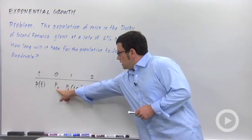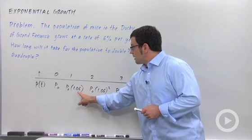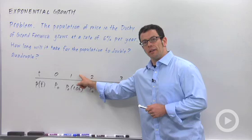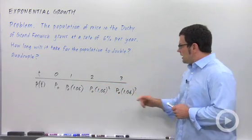And so we get p sub 0 when t equals 0, p sub 0 times 1.06 when t equals 1, and p sub 0 times 1.06 squared when t equals 2, and so on.